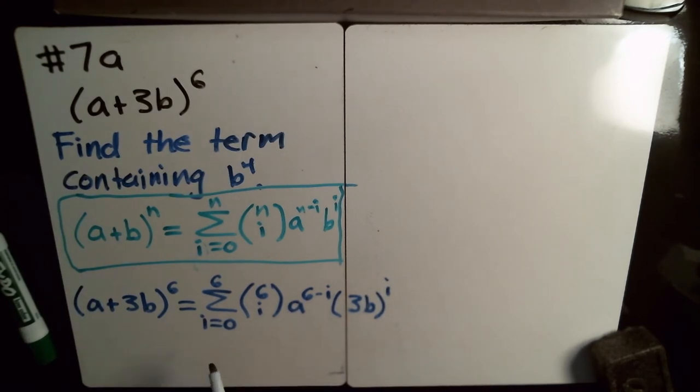So, and this is the same thing as doing like 6 choose 0. Starting at 0, we just plug in 0, a to the 6th plus 6 choose 1. We decrease the power on a, so a to the 5th, and increase the power on 3b, and then we keep going along here. The reason why I'm kind of writing it out this way is so that I don't have to write all of this out to find the term that I need.